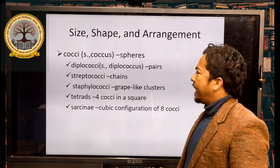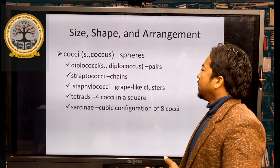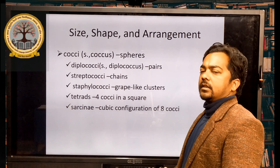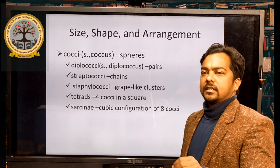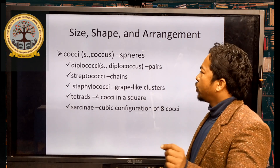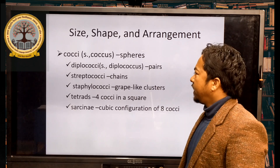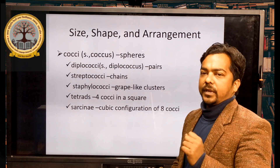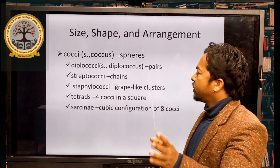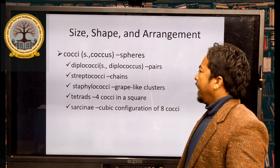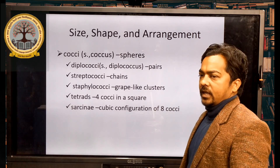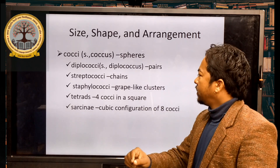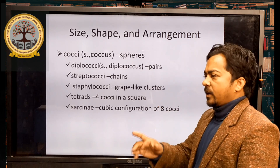We are talking about size, shape, and arrangement of prokaryotic cells. First, cocci — cocci means spheres in circular form. Their arrangements include diplococci, which means two circles in a pair. Next is streptococci — streptococci means circular bacteria arranged in a chain.